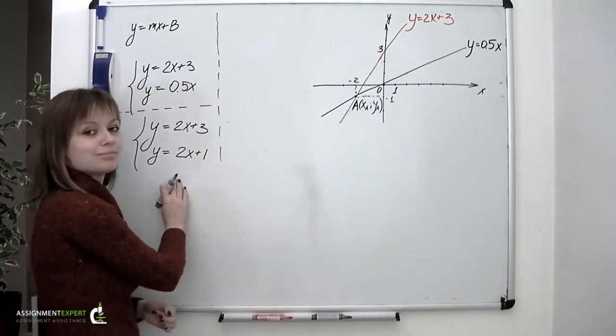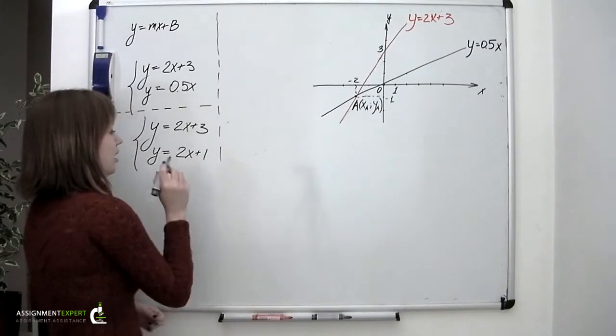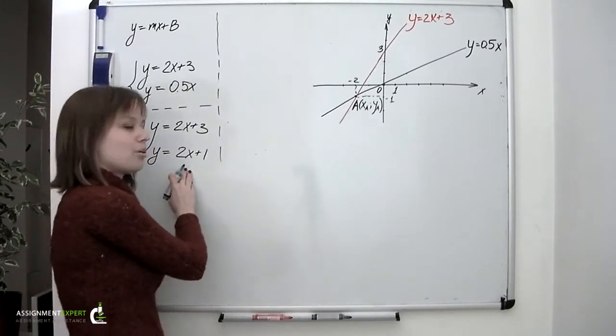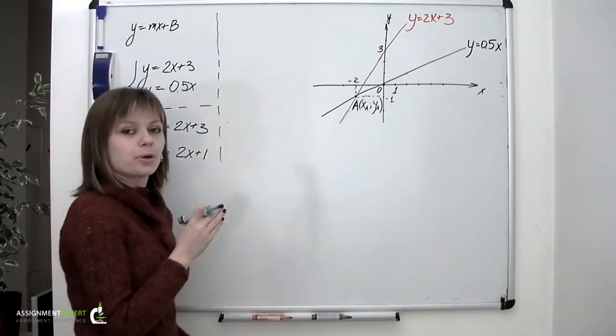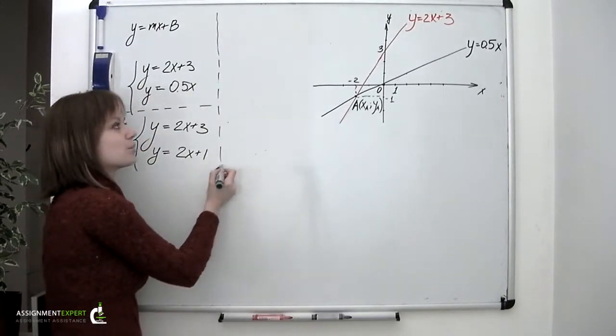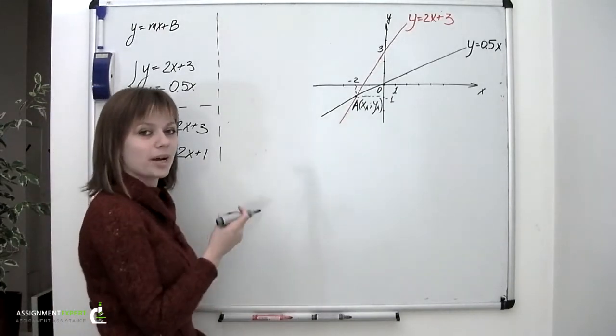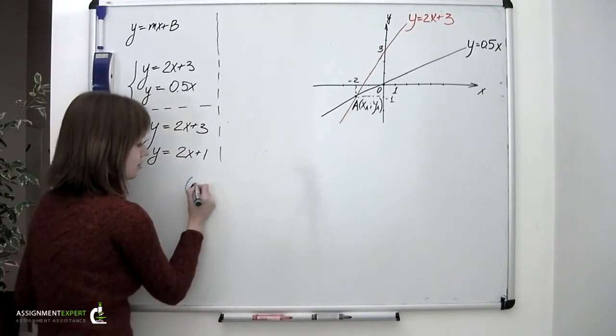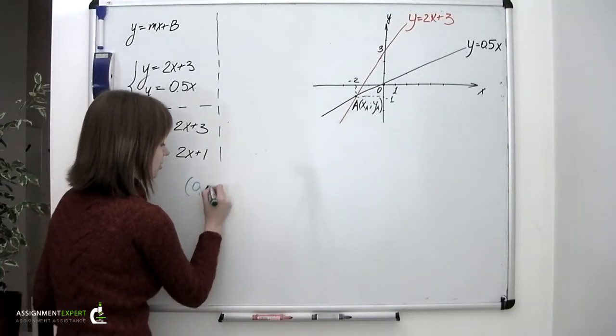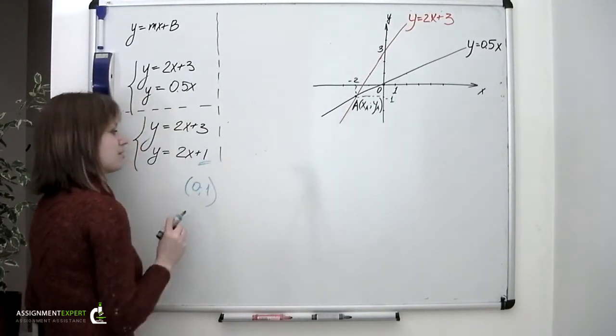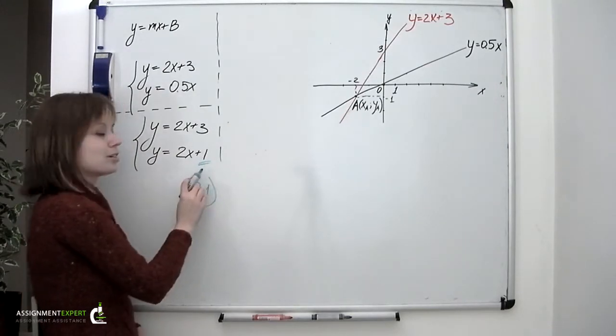And recall how it is done. So, to graph a line on a plane, you need two points. And one of them we can already name. And that is the point where the line crosses the y-axis, which is called the y-intercept. And it has coordinates 0 and 1, because the b for this equation equals 1.